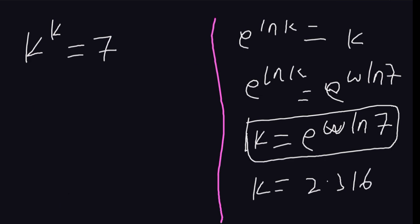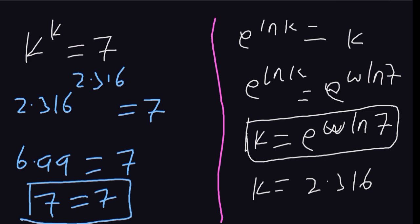And this gets us back to our boundary: 2 is less than k, and k is less than 3. You notice that 2.316 is in the range. So let's verify if this value is correct. We shall have 2.316 to the power of 2.316 equals 7. My calculator is giving me a value of 6.99 equals 7. Rounded off, it is the same as 7, which confirms that our value of k is correct.